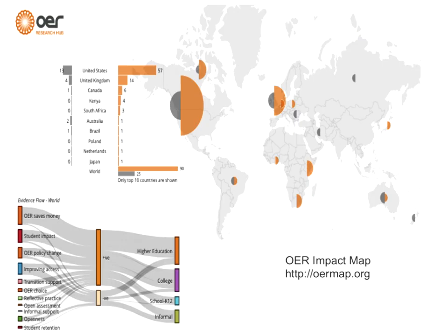We're an open research project, so we make all of our research available openly. You can go to our website — there's a lot of research that's been blogged, and we also curate OER research and include our own on our OER Impact Map, which you can check out at oermap.org.